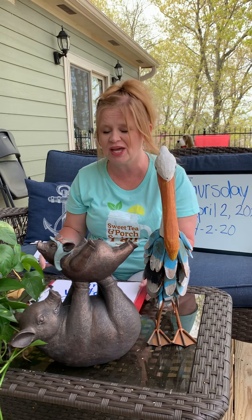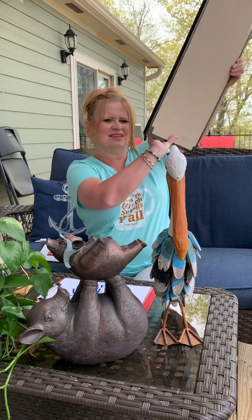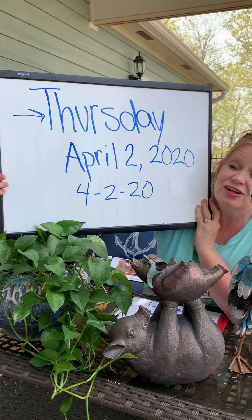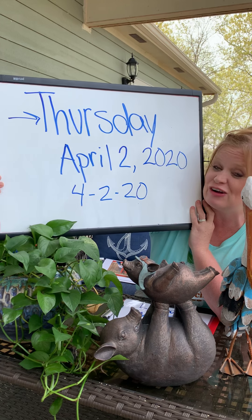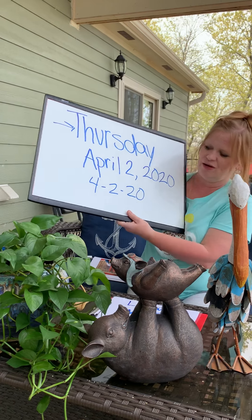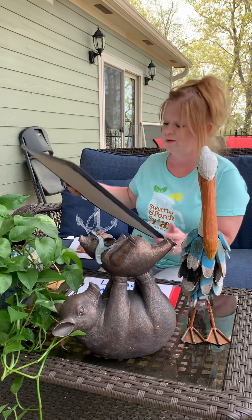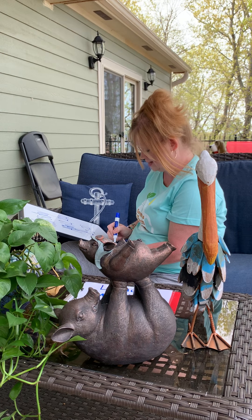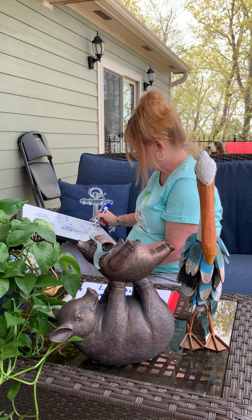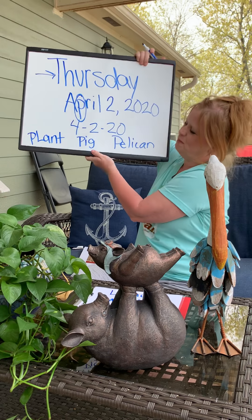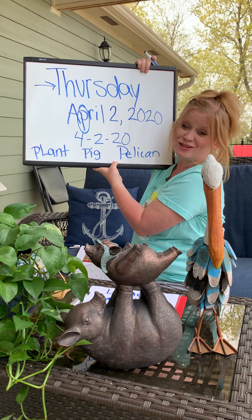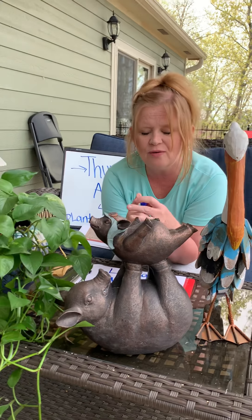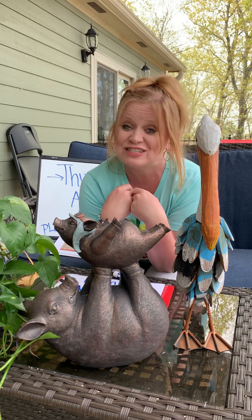I'm going to show you my board and I want you to see if you can find the letter P on this board. Where's the letter P? I want you to circle it on your mat. I'll circle it here — there we go. I circle the letter P. So I have a plant, a pig, and a pelican. The plant, the pig, and the pelican all start with the letter P.